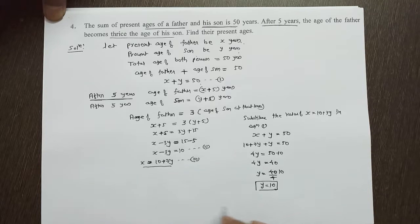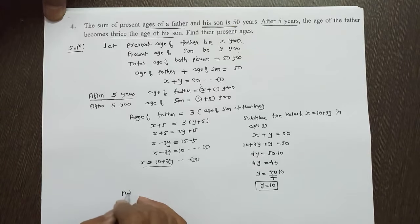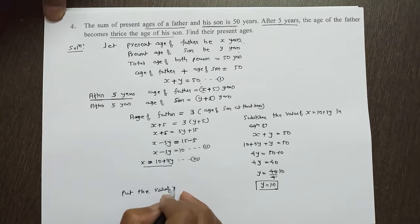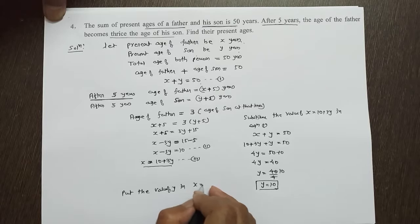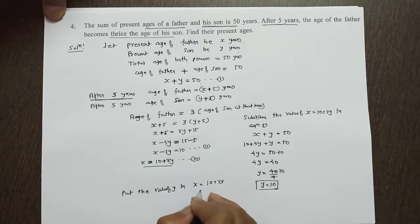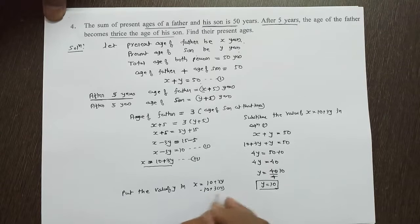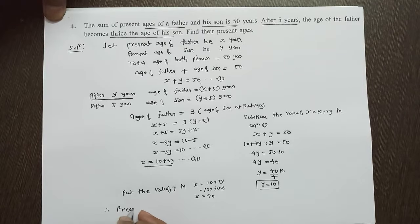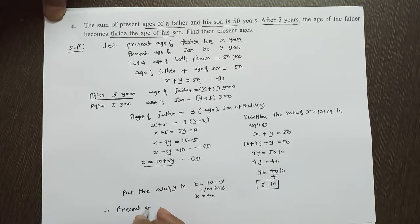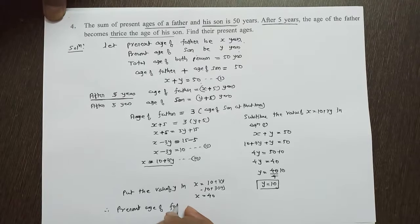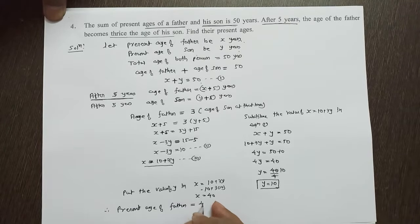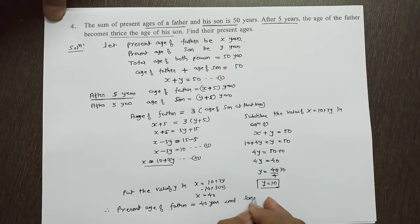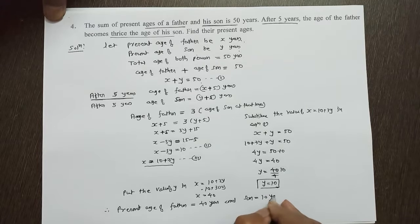Therefore, put the value of Y. Value of Y in X equal to 10 plus 3Y, 10 plus 3 into 10, X equal to 40. Hence, present age of father equal to 40 years and son equal to 10 years.